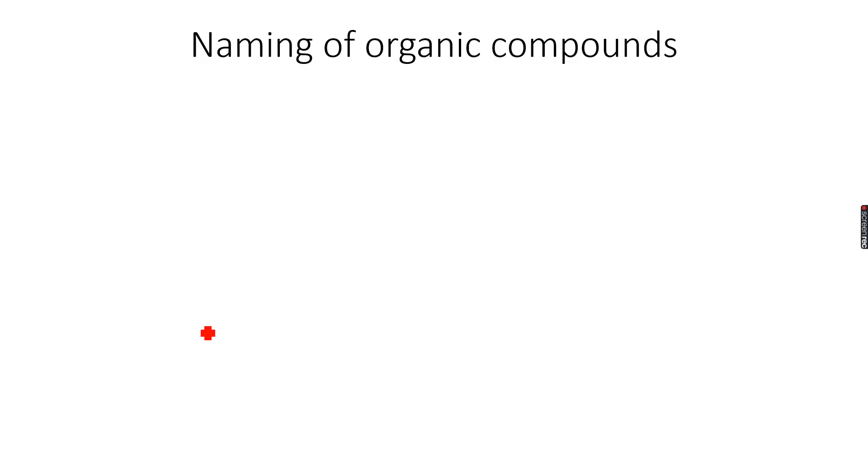So naming of organic compounds. How do we name an organic compound? Let's say we have a simple organic compound, methane. Why is the name methane? How do we get to that name? First of all, we'll see the number of carbon atoms. The number of carbon atoms in this case is one.